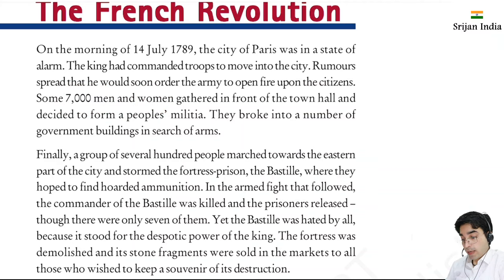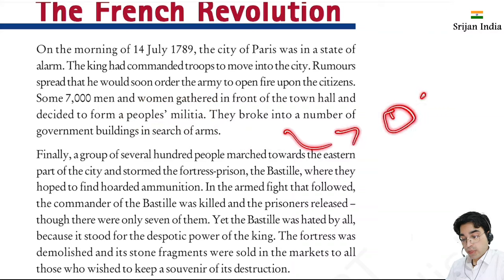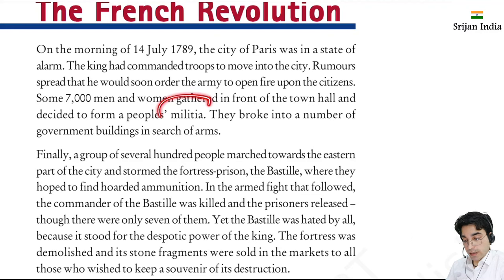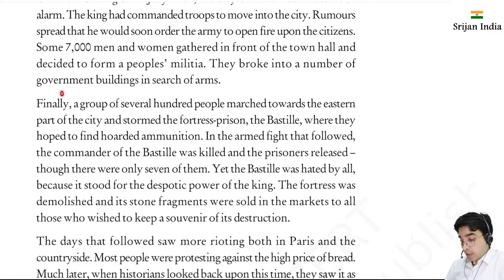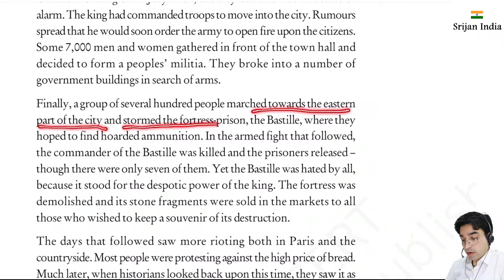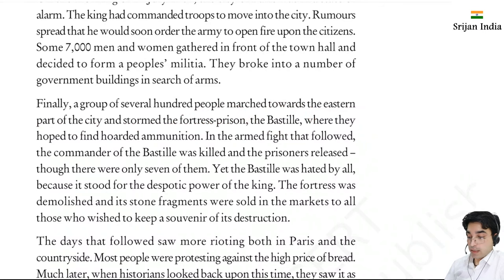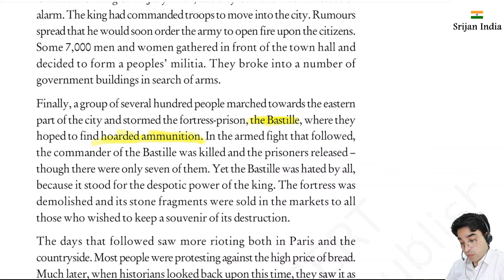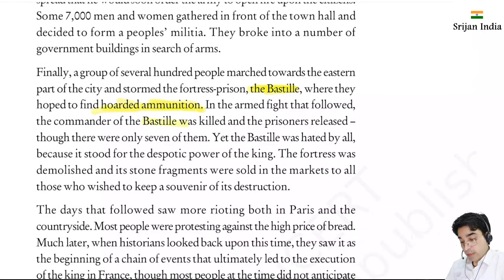Militia means when people take up arms as a group - that is called militia, a non-state actor. They broke into government buildings in search of arms. Then a group of several hundred people marched towards the eastern part of the city and stormed the fortress prison called the Bastille. They hoped to find hoarded ammunition there. In the armed fight that followed, the commander of the Bastille was killed and the prisoners released - though there were only seven of them.